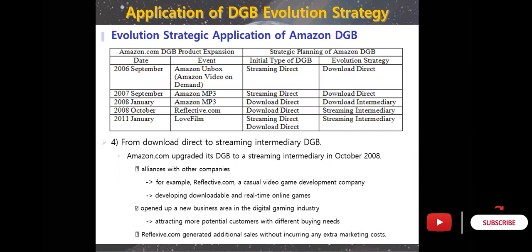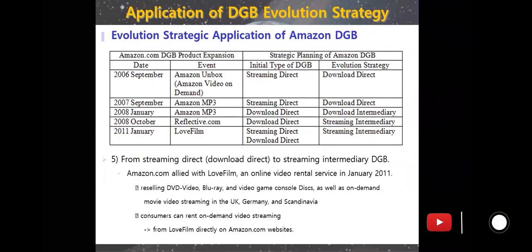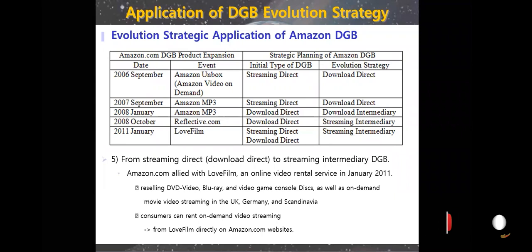This opened up a new business area in the digital game industry, attracting more potential customers with different buying needs. Reflexive.com helped generate additional sales without incurring any extra marketing cost. This represents the fifth strategy evaluation for Amazon.